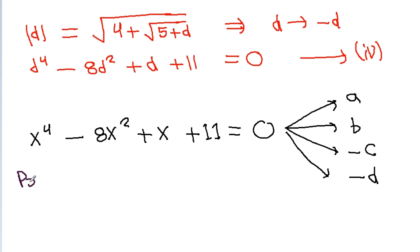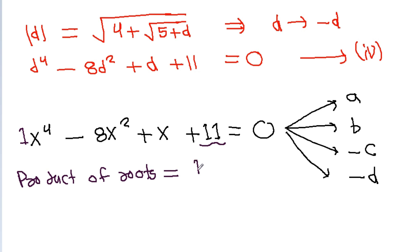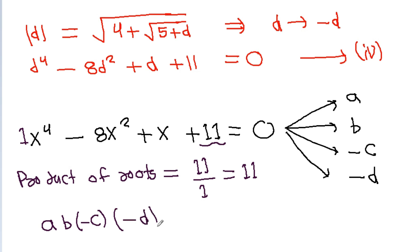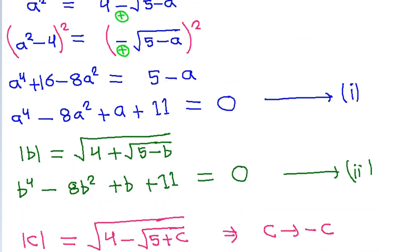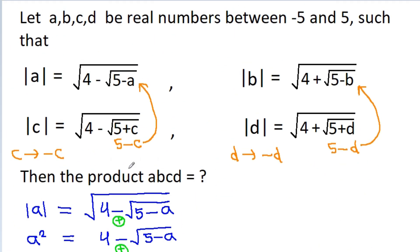So we can say that x⁴ minus 8x² plus x plus 11 equals 0. The product of the roots will become a · b · (minus c) · (minus d), which equals 11 divided by 1, that is 11. So we get a·b·c·d equals 11. Therefore, the product a·b·c·d equals 11.